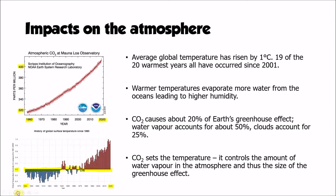There is a very significant rise in temperatures observed on the planet in the last few decades. In fact, global temperature has risen by about one degree C since pre-industrial times. So as a result of human activity, the Earth's temperature has gone up by an average of one degree C. Additionally, 19 of the 20 warmest years have all occurred since 2001, all within that latter part of the graph.